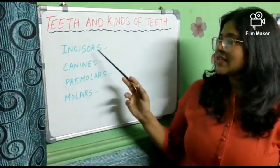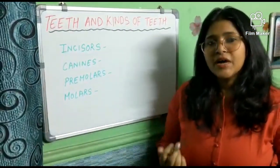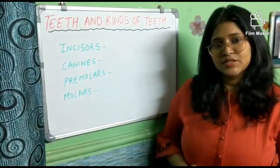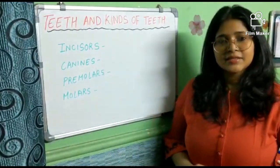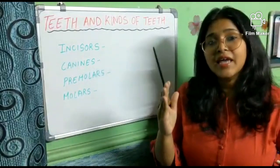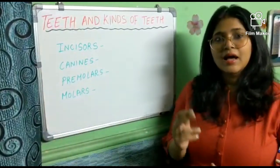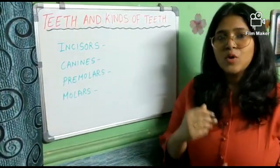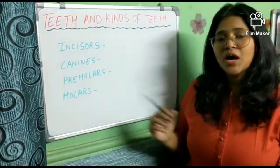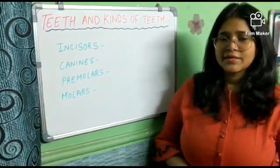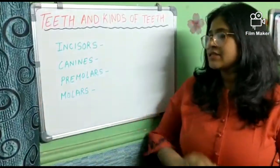The first one is incisors — all of you repeat after me: incisors, canines, premolars, and molars. So after knowing the names of these teeth, let's see how they look.